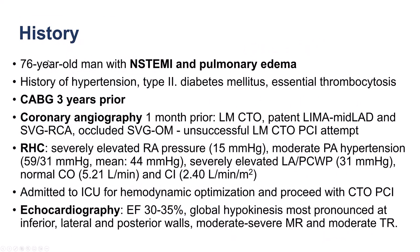The patient was an elderly gentleman with previous bypass who presented with non-STEMI and pulmonary edema. He had an angiogram one month prior that showed patent LIMA to LAD and vein graft to the right, but the SVG to the obtuse marginal was occluded, and at that time there was an unsuccessful attempt to open the left main CTO. At presentation, the patient had very poor hemodynamics with a right atrial pressure of 15, wedge pressure of 31, and was sent to the ICU for hemodynamic optimization and aggressive diuresis. He had very low ejection fraction.